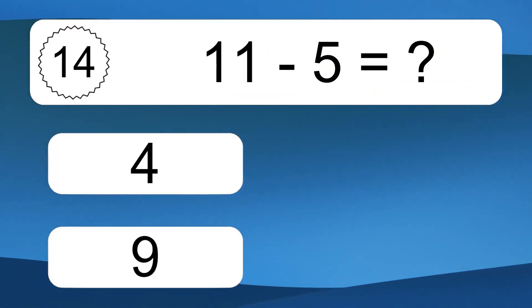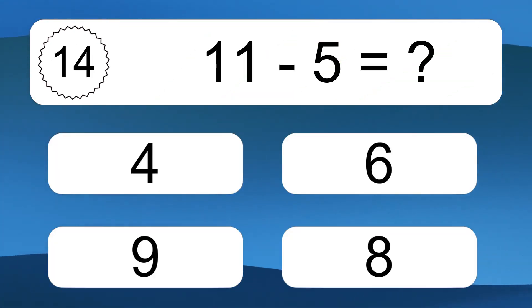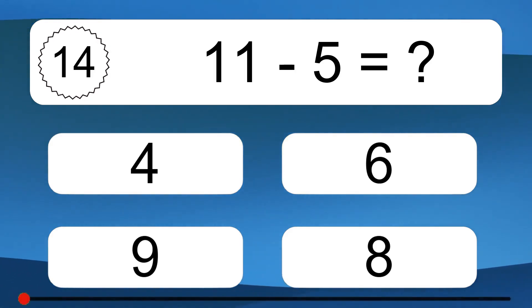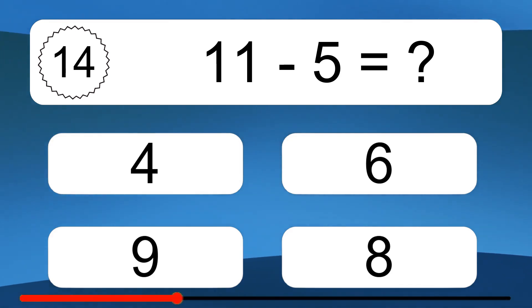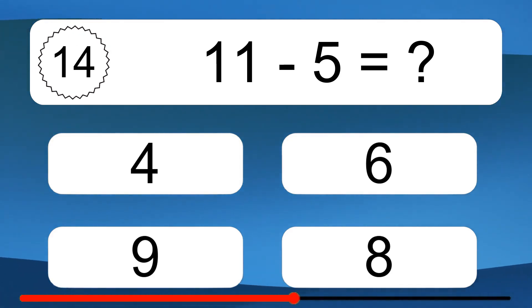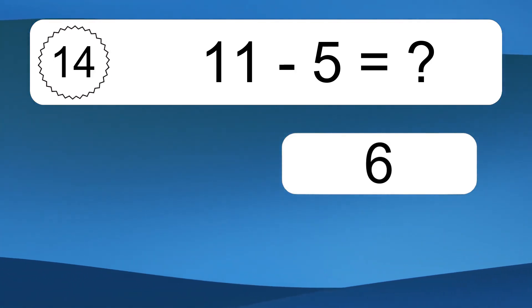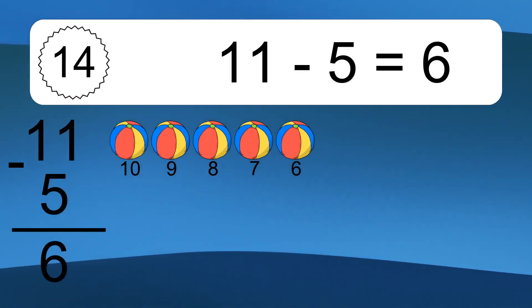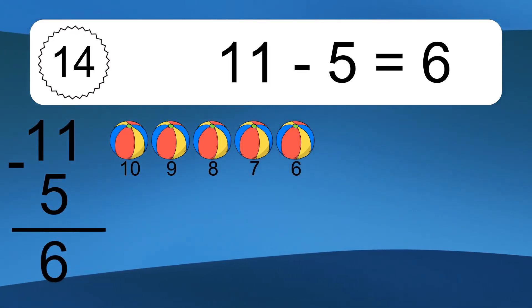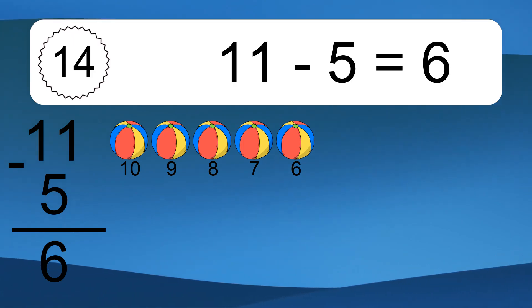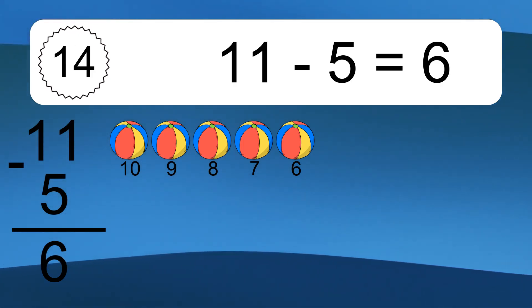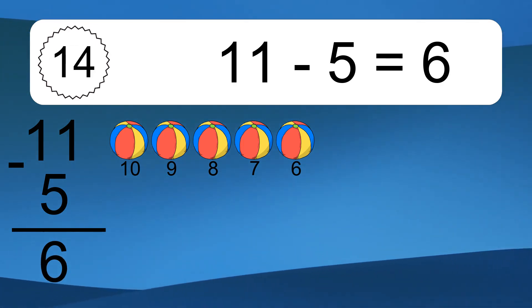11 minus 5 equals what? 11 minus 5 equals 6. Let's count it. 10, 9, 8, 7, 6.